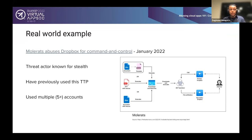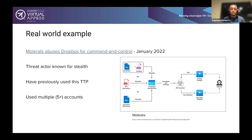Here's a real-world abuse of Dropbox: the threat actor MoleRats was found abusing Dropbox for command and control in January of this year. This threat actor is known for being stealthy and has previously used this tactic of abusing cloud apps. Interestingly, they used multiple accounts in this offensive flow — a malicious Office document gets downloaded by a victim, executes some PowerShell code, which downloads and executes a .NET backdoor. This backdoor communicates to the attacker via Dropbox instances, with the attacker segmenting cloud applications by responsibility — one Dropbox account just for C2, another for file exfiltration — so that if one gets burned, they can still talk to the compromised machines.